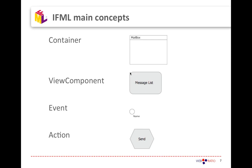Upon components, users can perform events. An event is represented by a circle and represents any kind of happening that could cover user interaction like clicks, drag and drops, and in mobile systems more complex events like pinch or screen rotation. Events can also come from the system, like exceptions or success or failure of some business logic.